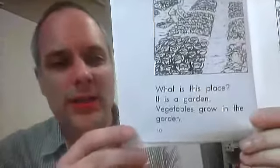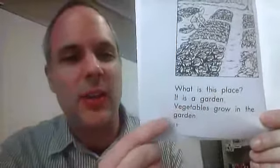What is this place? It is a garden. Vegetables grow in the garden.